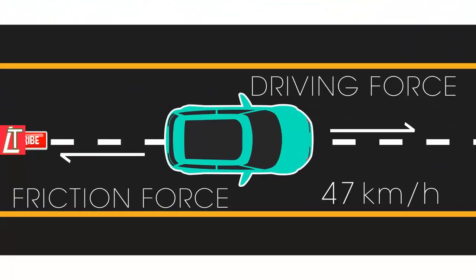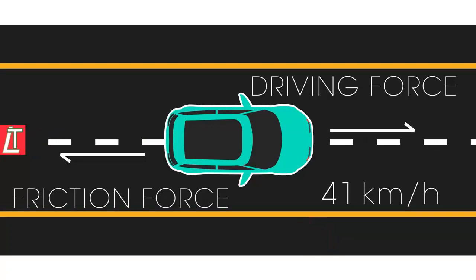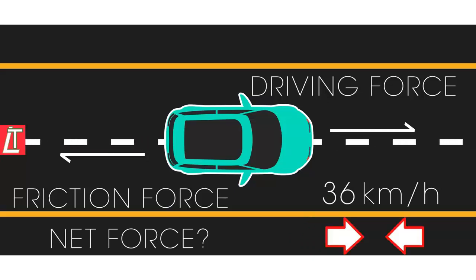So try this one. The car is slowing down. The arrow shows its velocity, which is getting lower. What direction is the net force on the car? Is it forwards or backwards?